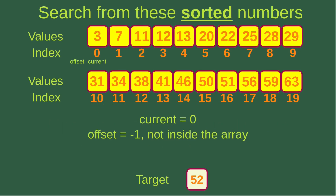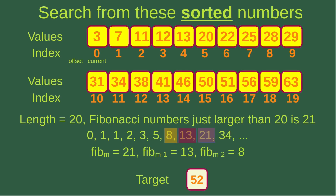Let us look at another situation. Suppose I want to find 52 from these sorted numbers. I have 20 numbers. The current index is set to 0 and the offset index to minus 1. Since the offset index is smaller than 0, it is placed outside the array. With 20 elements, the Fibonacci number just larger than 20 is 21, so Fibonacci M is 21, Fibonacci M-1 is 13, and Fibonacci M-2 is 8.